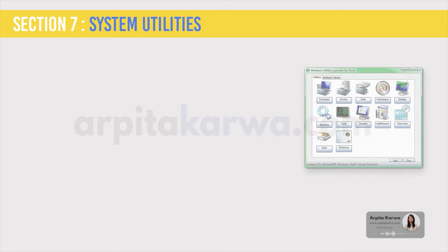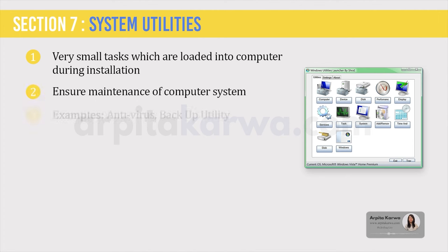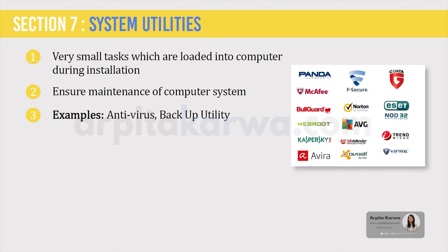Let's come to the last category of software: System Utilities. These are small programs which are loaded into the computer when installed in your home or office. Their task is to ensure the maintenance of the computer system. Examples include disk compression, disk defragmenters, backup utilities, disk cleaners, antivirus programs, etc.